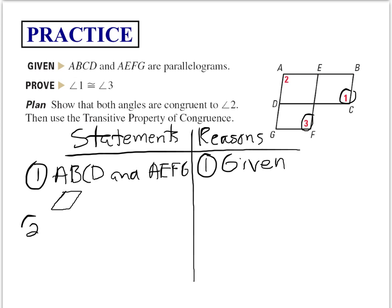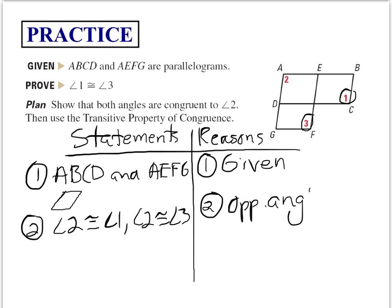Well, we know that angle 2 needs to be congruent to angle 1, and angle 2 is also congruent to angle 3. The reason we know this is because opposite angles of a parallelogram are congruent. Now there's no abbreviation to that.